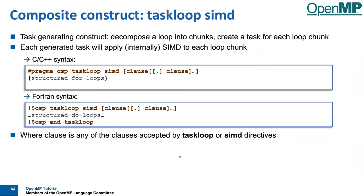There's also a composite construct called taskloop simd. This is another way of specifying that a loop chunk should be further subdivided into SIMD vector registers and executed using SIMD instructions. We'll get to this when we talk about SIMD — which is next time.